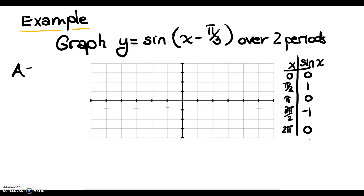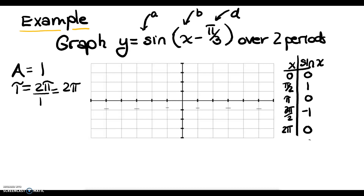The first thing we do is find the amplitude. A is located in front of sine — A is 1. B is located in front of the x, and D is being added or subtracted from x. Since A is 1, our amplitude is 1. Since B is 1, our period is 2 pi over B, which is 2 pi. Our phase shift — when we move a sine or cosine function left or right, that's called a phase shift. I use the Greek letter phi for it. We have a phase shift of pi over 3.